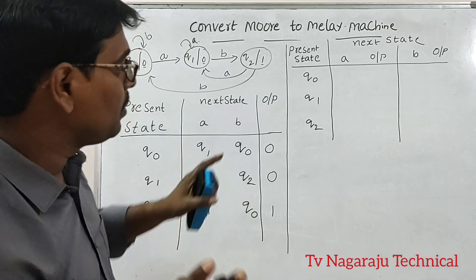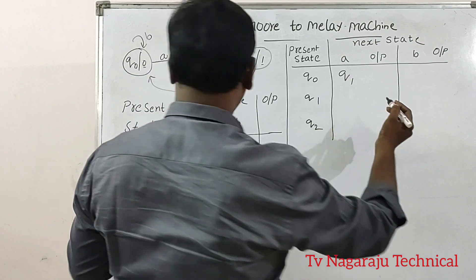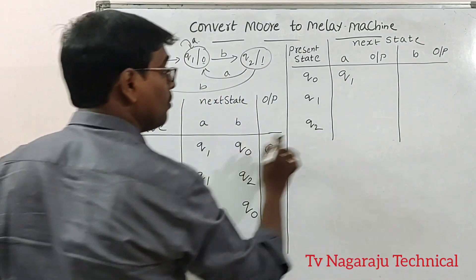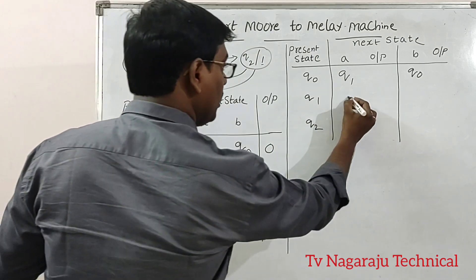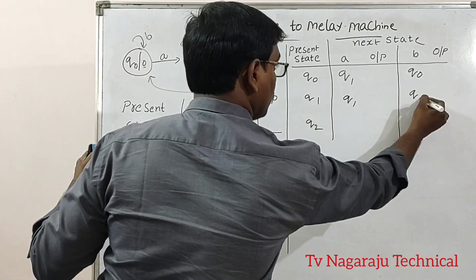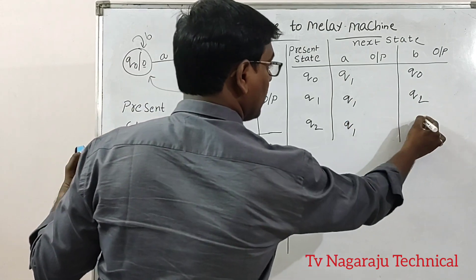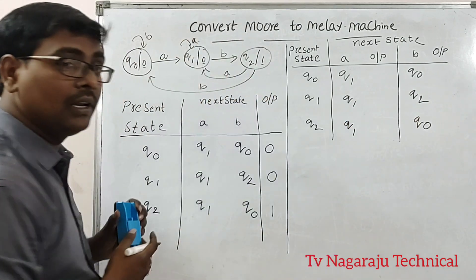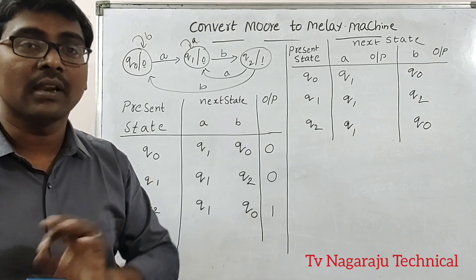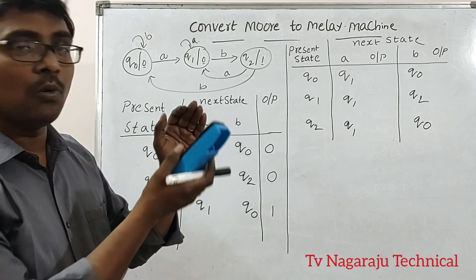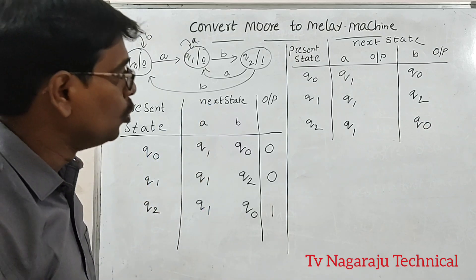I will draw the transition diagram. Q0 on A moves to Q1, Q0 on B moves to Q0. Next Q1, Q2, Q1, Q0. Now, how to write the outputs? There are two ways: directly you can write the output, or you can use the procedure. I will explain both ways.